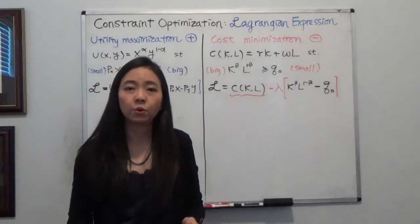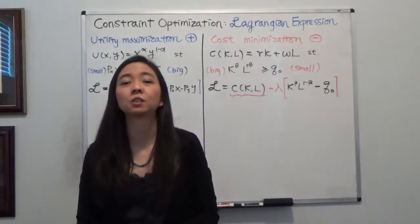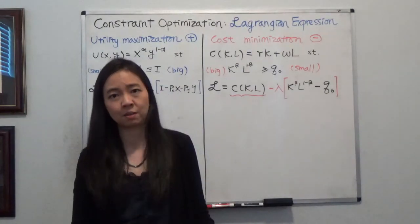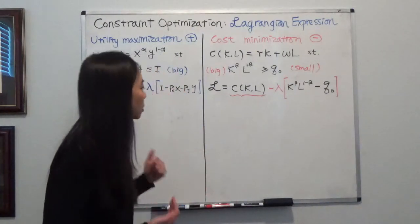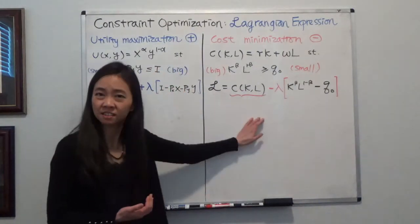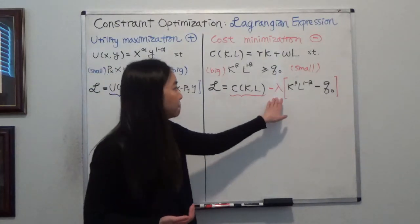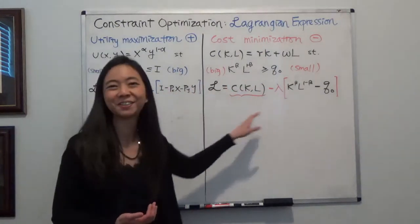Typically when you're setting Lagrangian, that's because you're trying to maximize or minimize something. But the issue will arise, you will think, do I put a plus or minus sign in front of my Lagrangian multiplier, in this case it's lambda.